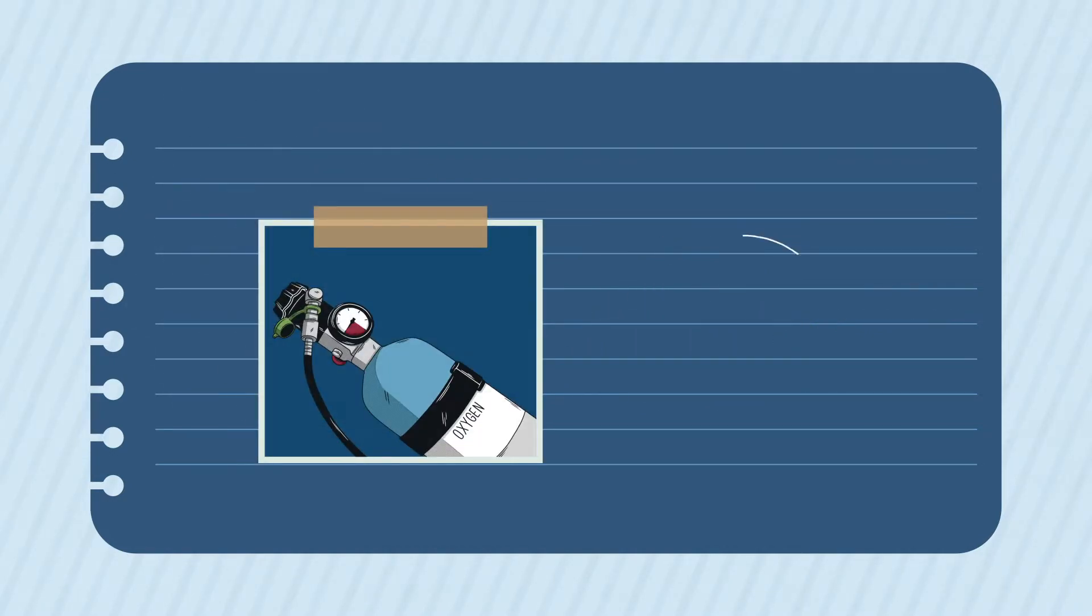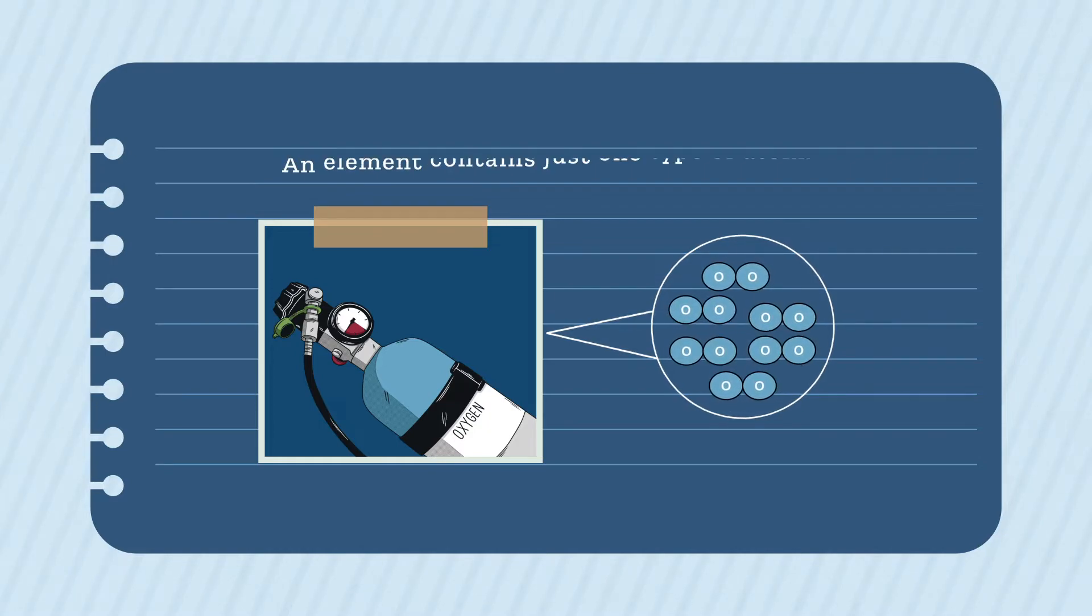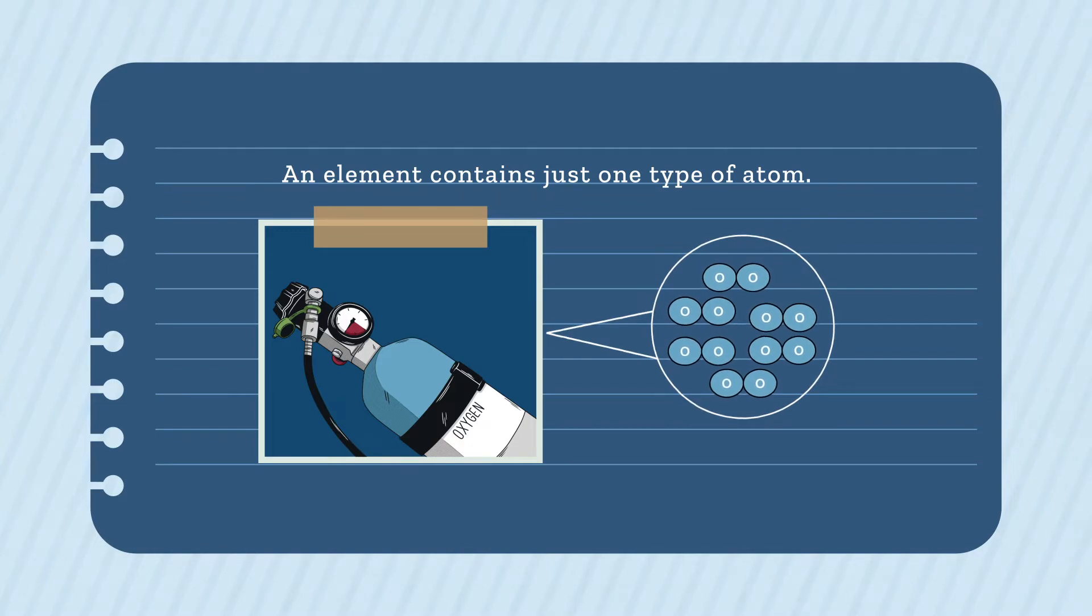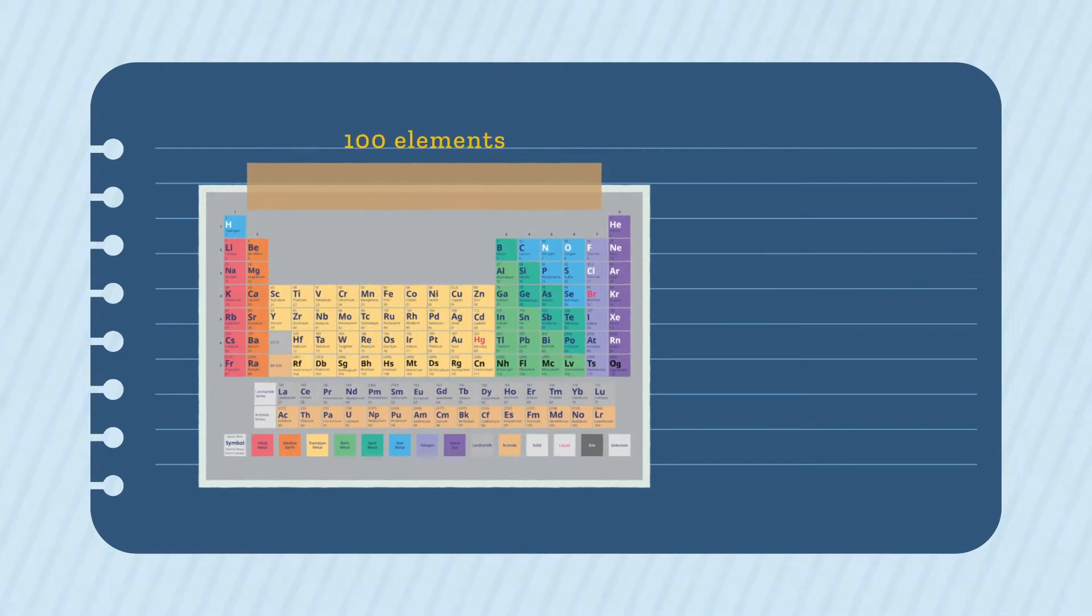Not all atoms are the same. Copper atoms are different to oxygen atoms. A substance that contains only one type of atom is called an element. And there are around 100 elements.